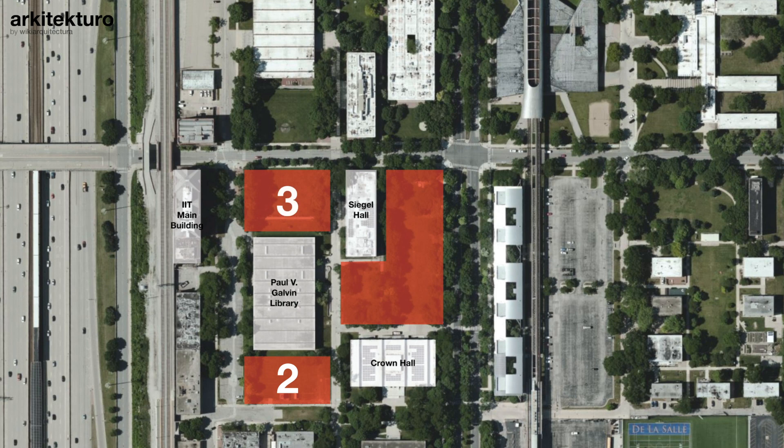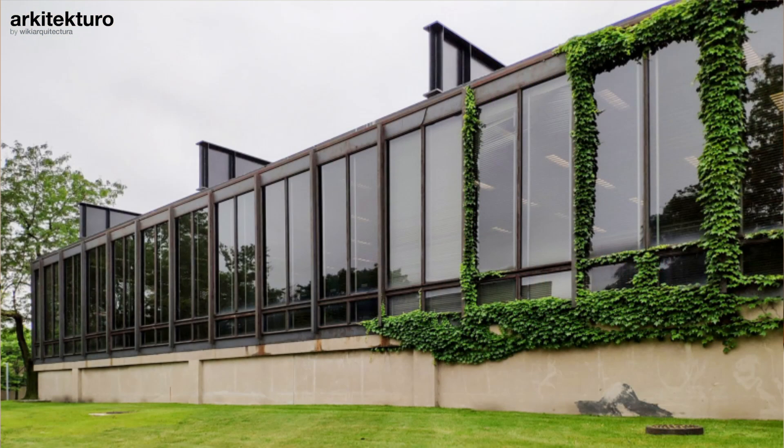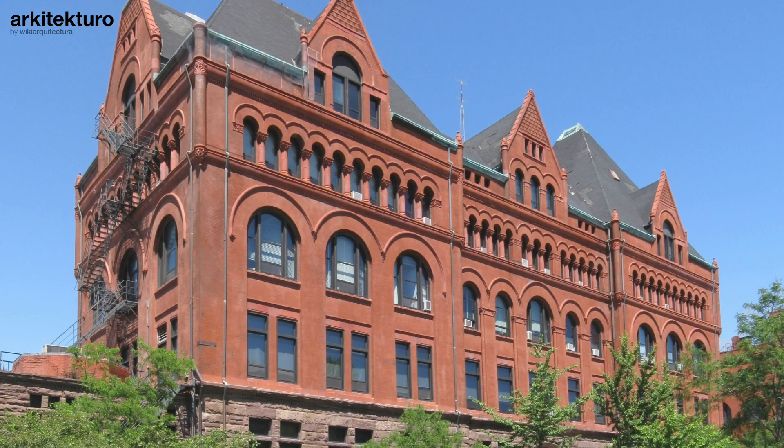The second and third site options are located on either side of the Paul Galvin Library. This building was not designed by Mies — it was designed by Walter Netsch when he was working for Skidmore, Owings and Merrill. The library takes clear inspiration from Mies' design for Crown Hall and today is the main library on campus. Site 2 is strategically located between Crown Hall and the library, which makes a good case for placing a new architecture-focused library there. Site 3, on the other hand, is further apart from Crown Hall but is right behind the IIT main building, which also used to be the main building of the Armour Institute of Technology. In this sense, the third site could have a more symbolic position, connecting the historic building with the rest of the campus — becoming a nexus between the old and the new, the past and the present — and it is also located right next to the Paul Galvin Library.